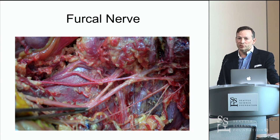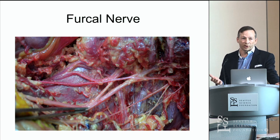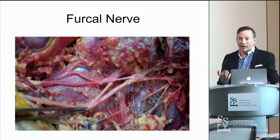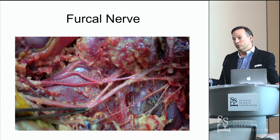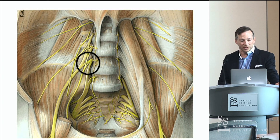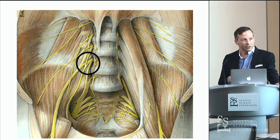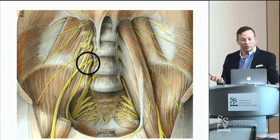The furcal nerve — 'furcal' just means a forked nerve, and even some anatomists aren't familiar with the term — refers to the L4 nerve root. It simply implies that the L4 nerve root gives contributions into both the lumbar plexus and the sacral plexus. Its larger half goes down into the lumbosacral trunk, feeding L4 into the sacral plexus — the combined lumbosacral plexus.